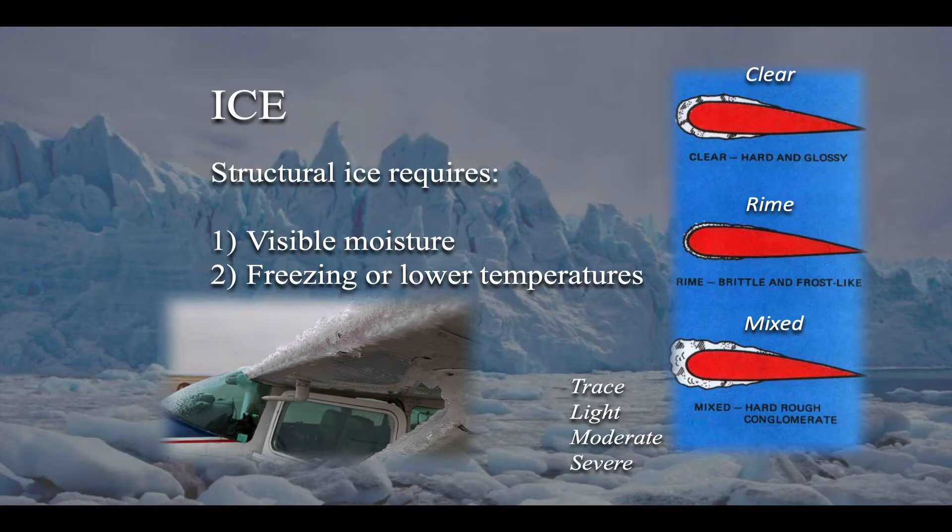Clear ice can form when the water droplets are larger. It kind of hits the skin of the aircraft and it kind of flows and gradually freezes.